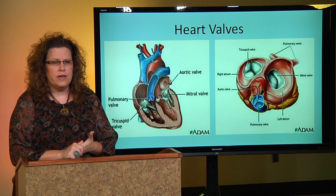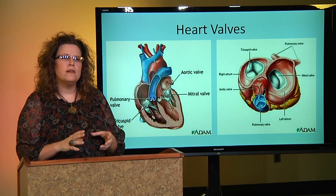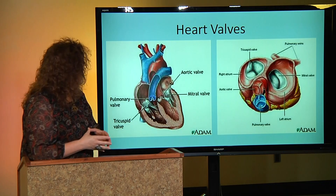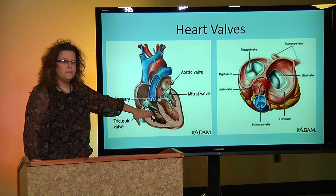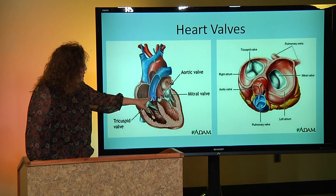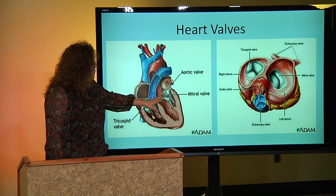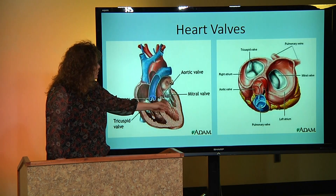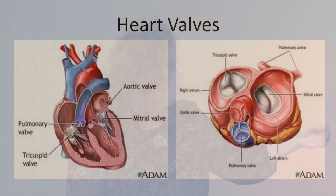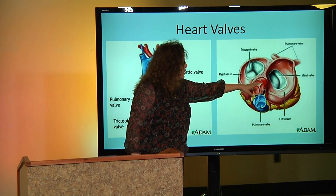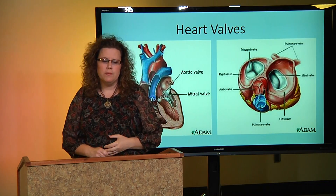There are also semilunar valves — the valves at the beginning of the vessels that go off of the heart. We have the pulmonary artery, the vessel that takes blood from the right ventricle to the lungs, and the valve there is the pulmonary valve. The second semilunar valve is the aortic valve — blood goes through the left ventricle, through the aortic valve, out the aorta, and to the body. The tricuspid valve is a tri-leaflet valve with three leaflets, and the mitral valve is a bicuspid valve with two leaflets.